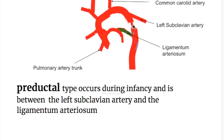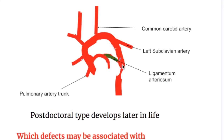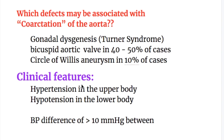The pre-ductal type occurs during infancy and is between the subclavian artery and the ligamentum arteriosum. The post-ductal type occurs later in life and is after the ductus arteriosus or ligamentum arteriosum. Certain defects may be associated with coarctation of aorta.